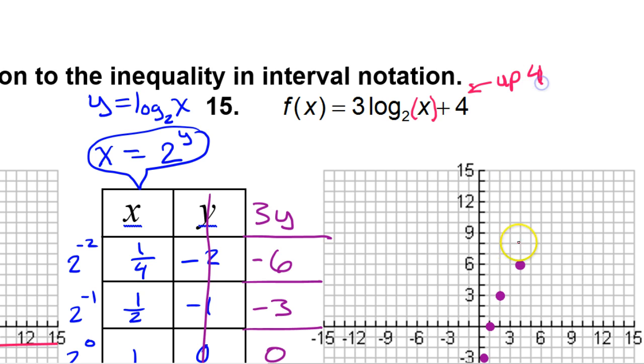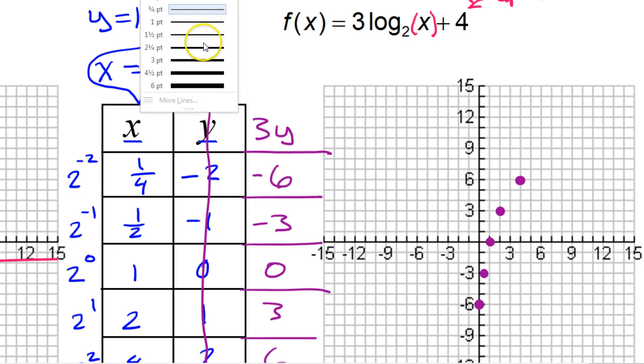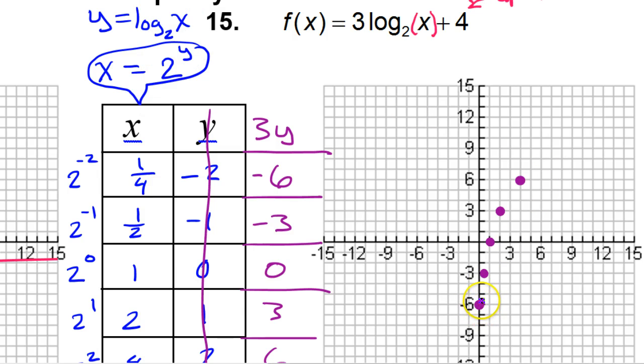So we need to move each of these 5 points up 4. And that will be the final graph. So these pink points are what you get if you translate the parent function up 4.